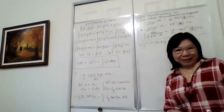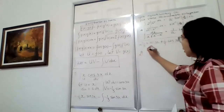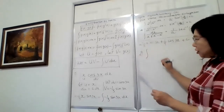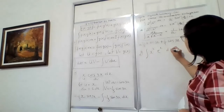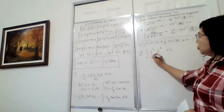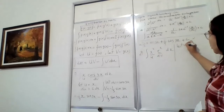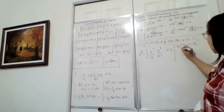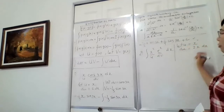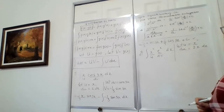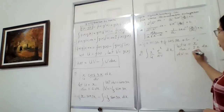Now let's go to the next question. Let's say you have to do the integration of x² times eˣ dx. I'm going to call x² as u and eˣ as dv. So let u equal x², which means du equals 2x dx.